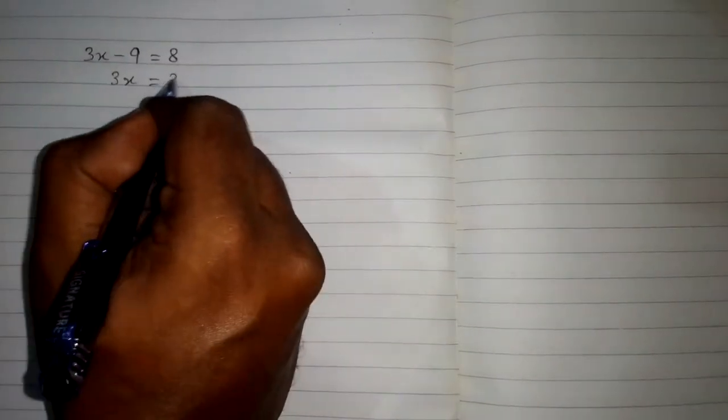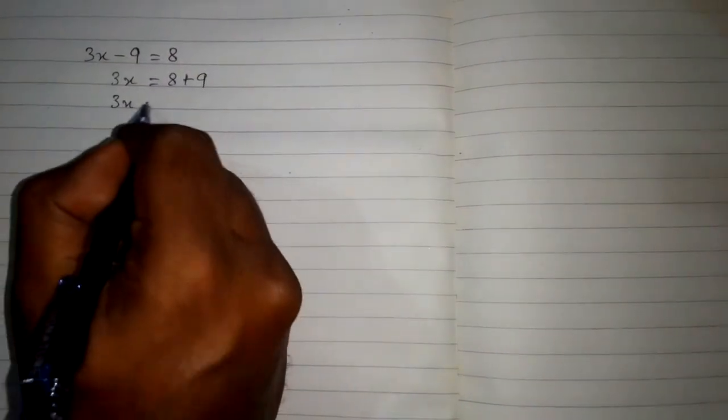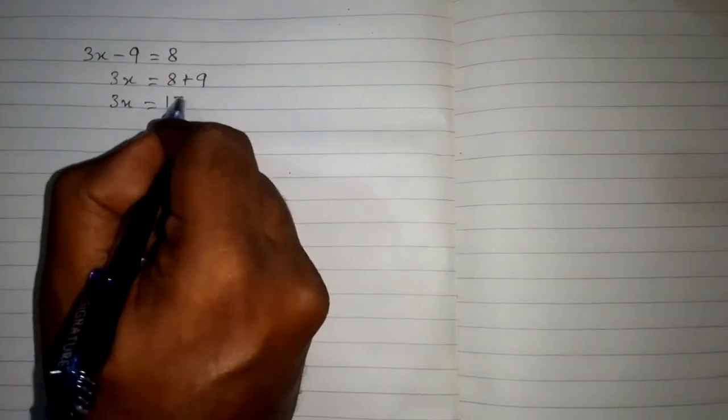In order to find the value of x, we will take this minus 9 on the other side of the equation and the minus 9 will become plus 9. We have 3x is equal to 8 plus 9 which is 17, and now we can see that